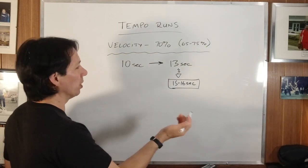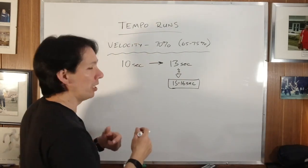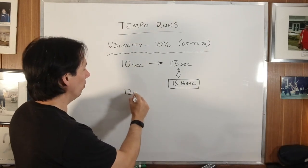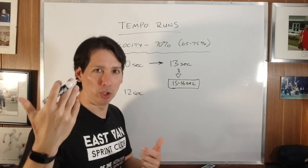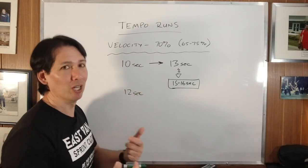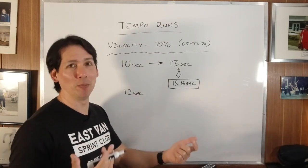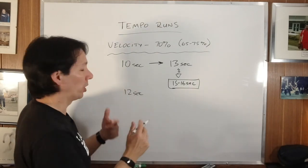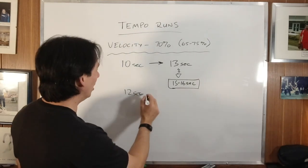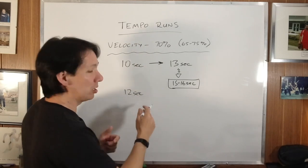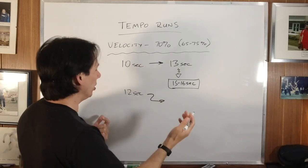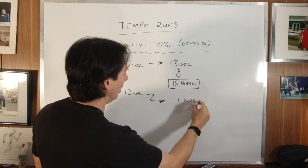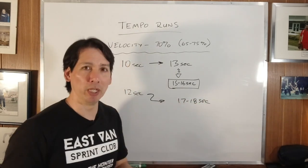If you have somebody who's a team sport athlete who's not running hundreds all the time, maybe they're about a 12-second 100-meter person in your estimation — don't test them. If you've got somebody who's an NFL player or an NBA player, don't time them over 100 meters to figure out their tempo runs. Just follow what I'm doing here. So 12 seconds — which is still not a bad time — that's going to be about 17, 18 seconds per 100 meters.